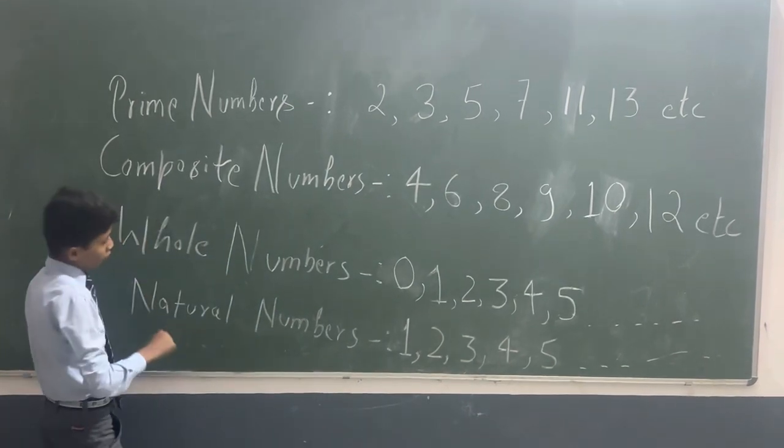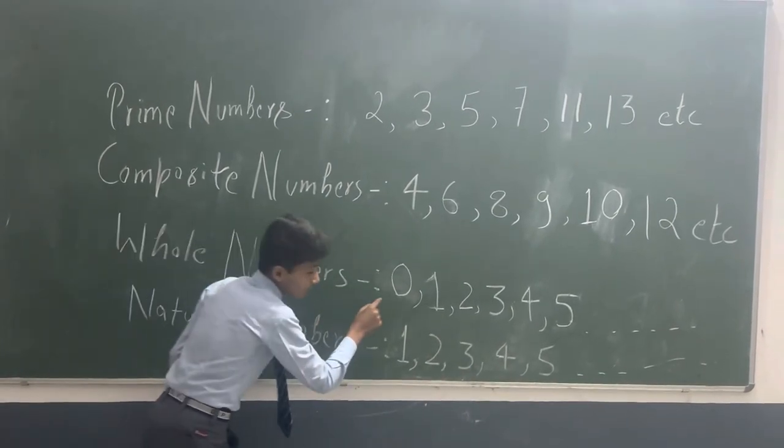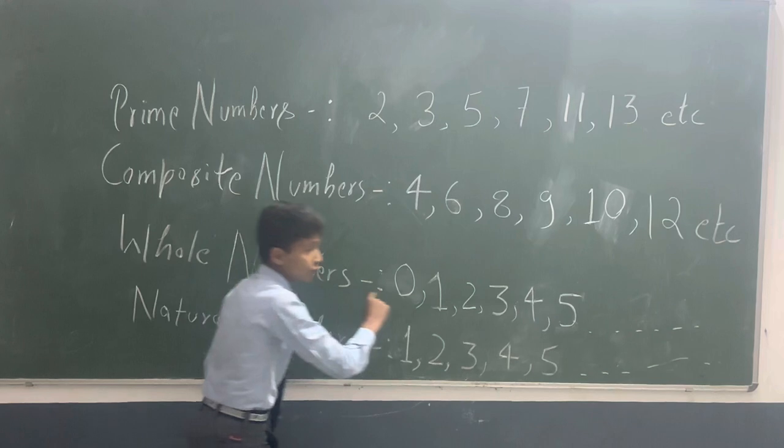After that, what is whole number? The whole number is starting from the 0 and goes to infinite.